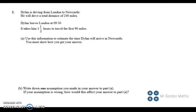Okay, question two. Dylan, he is driving from London to Newcastle. He will drive a total distance of 240 miles. Dylan leaves London at half nine in the morning, so 9:30.